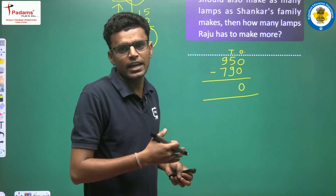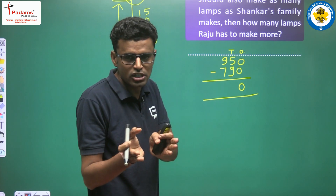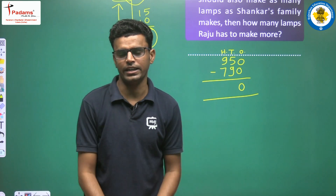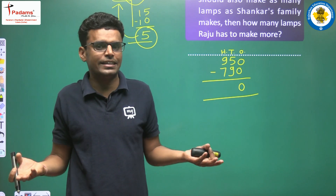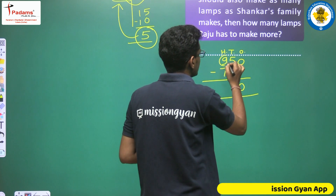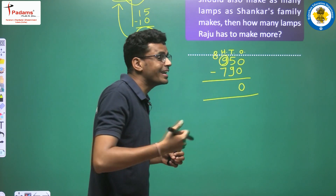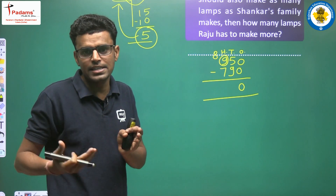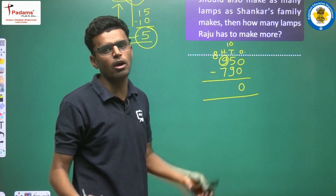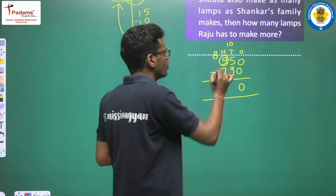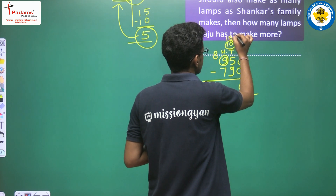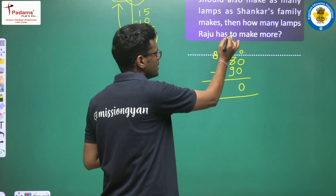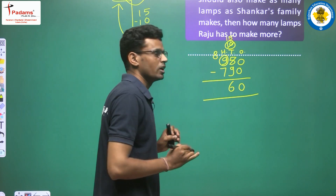For borrow: we go to the nearest relative — the hundreds place. The hundreds place has 900, which means 9 hundreds. 900 says it can give 100. So the hundreds place gives 100 to the tens place. 100 means how many tens? That is 10 tens. We borrow 10 tens, and we already have 5 tens, so total becomes 15 tens. Now 15 minus 9 equals 6 tens — that is our tens place answer.